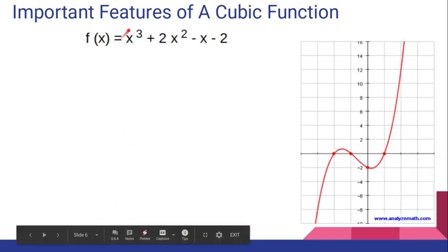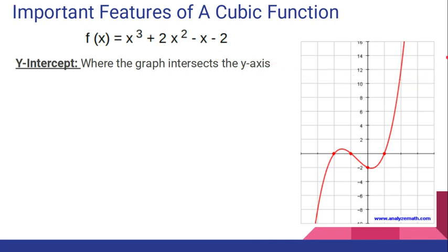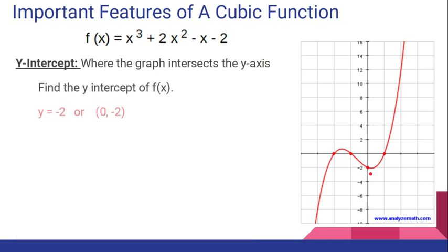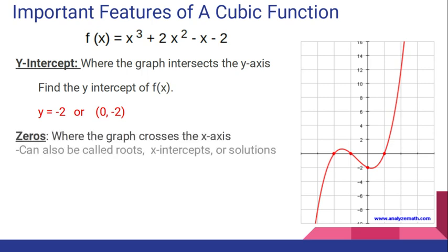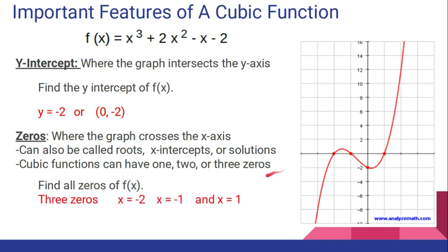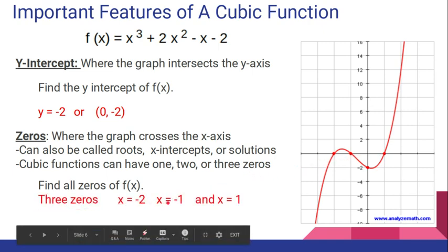Here's a third example of a cubic function — notice that it has that exponent of 3 again. What is the y-intercept of this graph? Take a look at your y-axis and your eye should go to this point at negative 2. It's at (0, negative 2), so y equals negative 2. Let's find the zeros of this graph — remember, there could be 1, 2, or 3 of them. Looking across your x-axis, I see it crosses in 3 places: at x equals negative 2, at x equals negative 1, and at x equals 1. Again, I could write that in set notation with my braces.